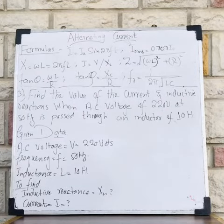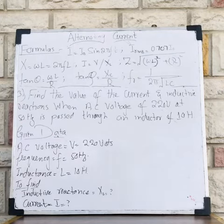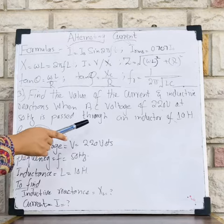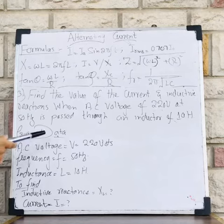Problem number three: Find the value of current and inductive reactance when an AC voltage of 220 volts at 50 Hertz is passed through an inductor of 10 Henry. We should first find the given data from this statement for calculation of unknown quantities.